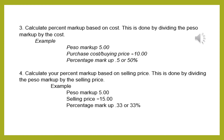Step number three: if you decide to calculate your percentage markup based on cost, this is done by dividing the peso markup by the cost. For example, your peso markup is 5 pesos and you purchased the item for 10 pesos, so you divide 5 by 10. Your percentage markup will be 50% or 0.5.